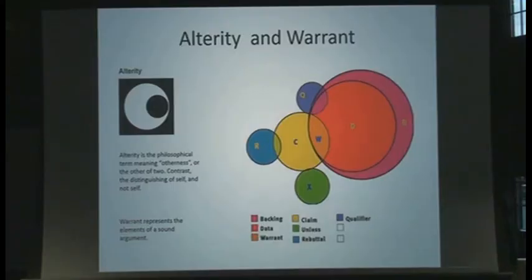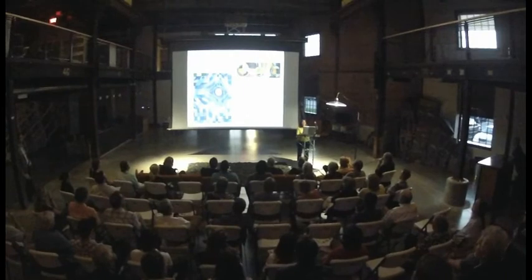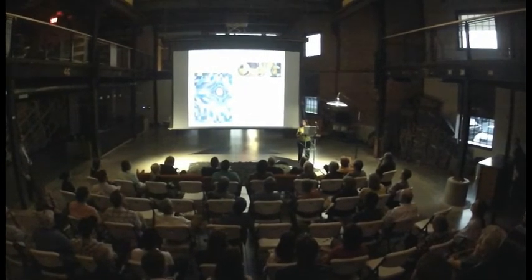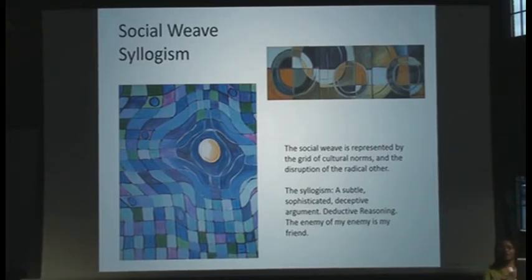And then there are some that are still in development. There's alterity, which has this sense of self, the otherness within self — so it's very simple. But then there is the warrant, and the warrant is how to create a strong argument, how to create a strong element of persuasion with backing and data and have a rebuttal to that. And then there are some that are a little bit more artistic — you can see the social weave and a disruption of cultural norms. And then the syllogism, which is kind of the 'enemy of my enemy is my friend,' the reliant on varying forces.